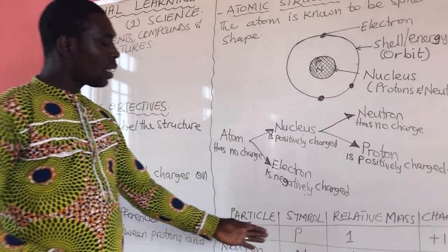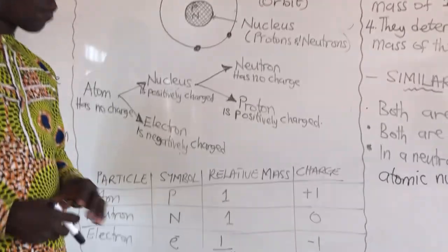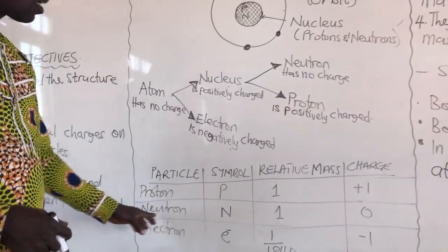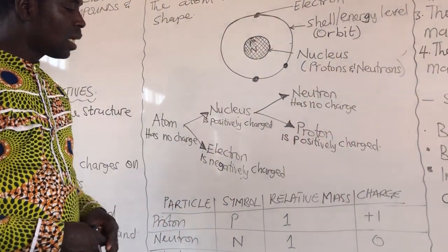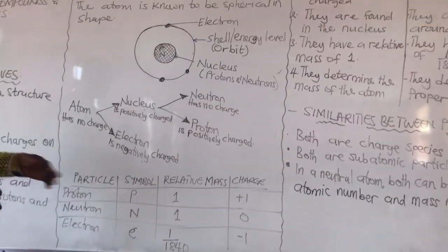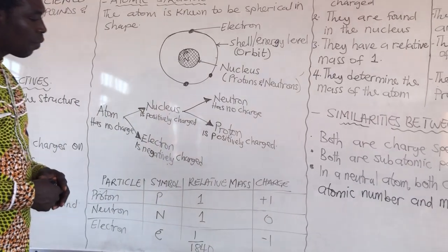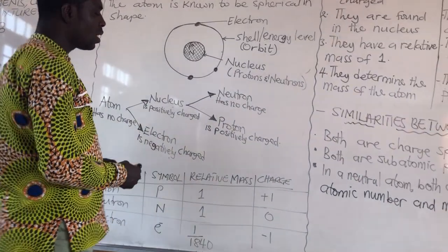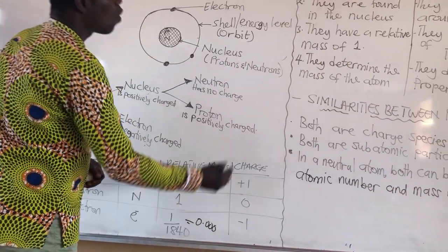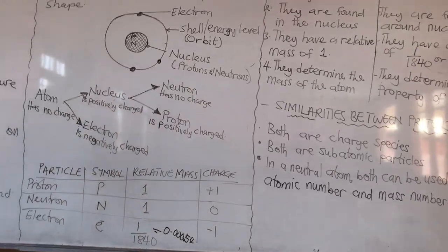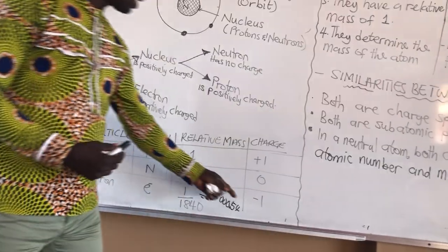First, the proton: the symbol is P (capital P), the relative mass is one, and the charge is positive one or plus one. Neutron: the symbol is N, the relative mass is one, and the charge is zero — meaning no charge. The electron has the symbol e-negative. It has a relative mass of one over one thousand eight hundred and forty, which is approximately 0.000054 — less than one. And it has a charge of negative one.